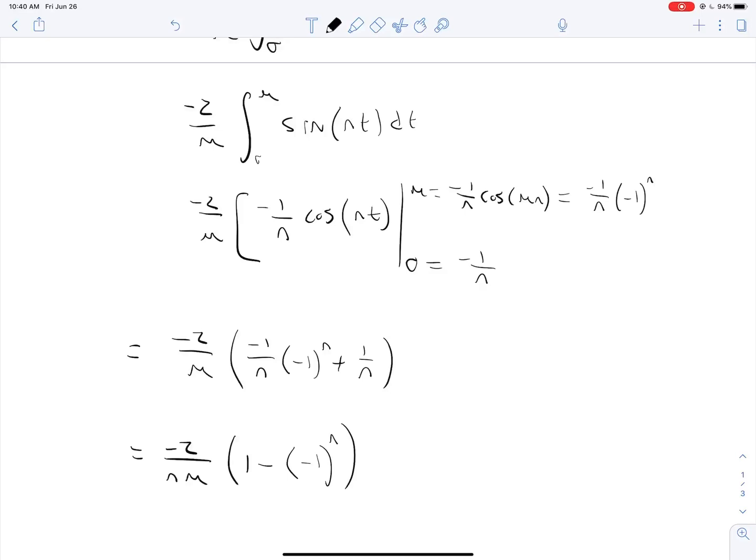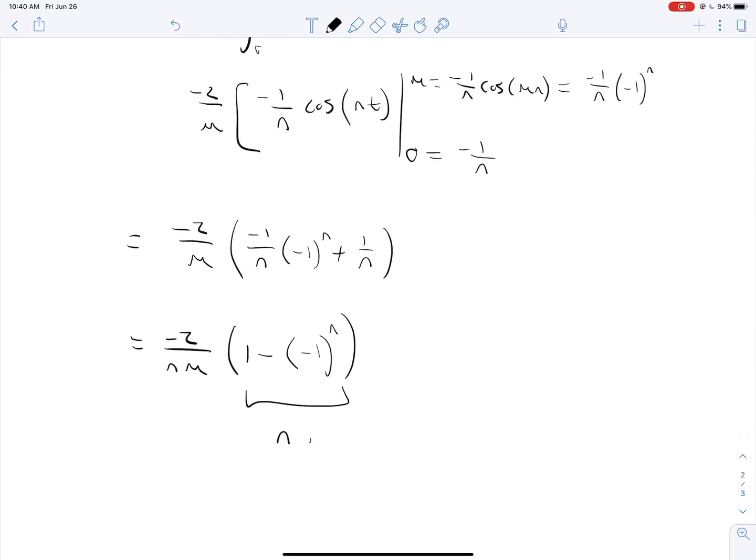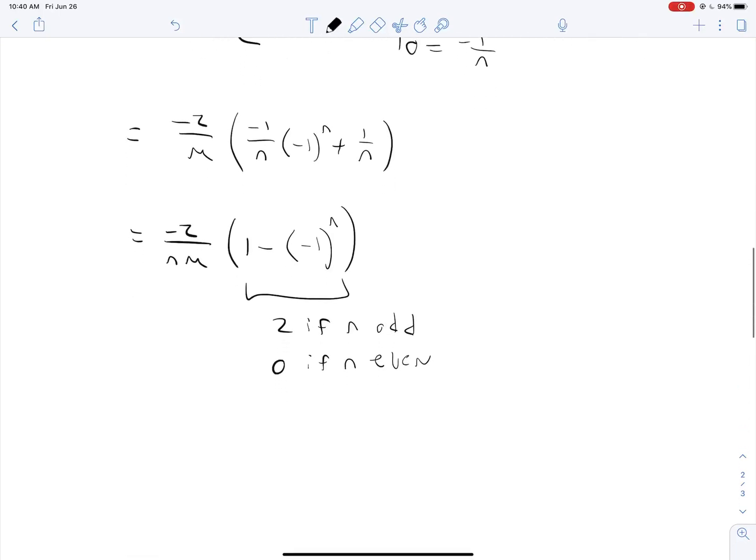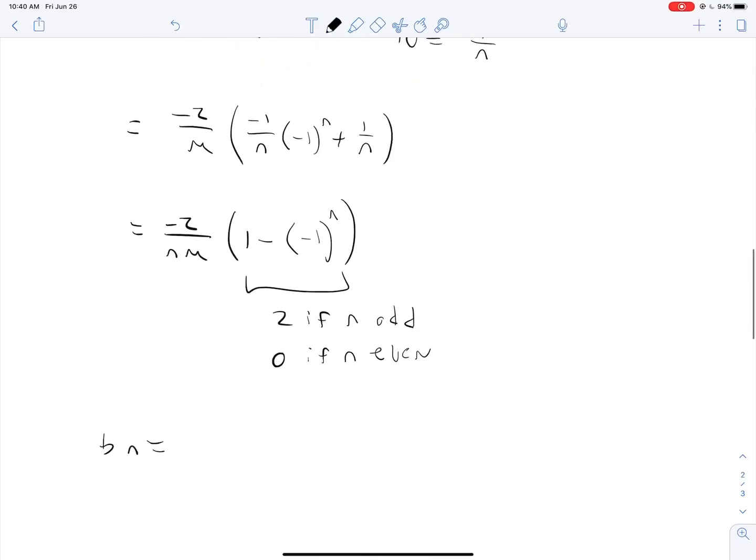Let's compactify this. If n is odd, this will evaluate to negative 1, and 1 minus negative 1 equals 2. If n even, this will be positive 1, and 1 minus 1 equals 0. So b_n is negative 4 over n pi for n odd.